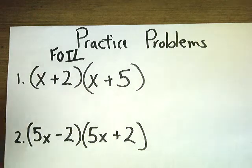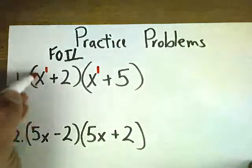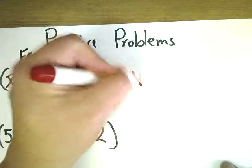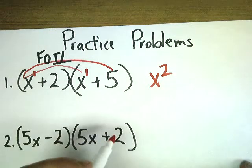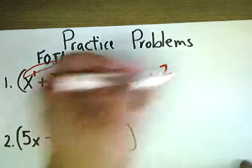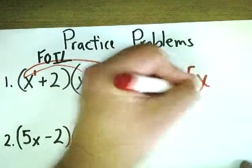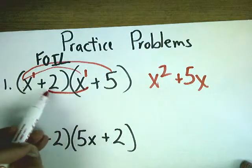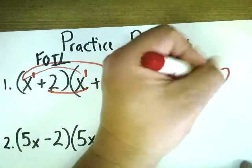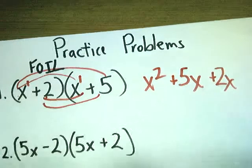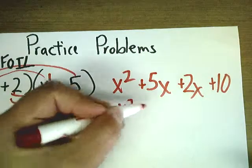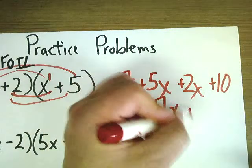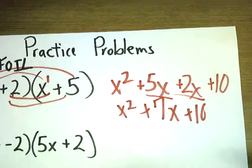The front numbers here, I've got x to the first power times x to the first power, so that reads to me x squared. Then I've got outside, so it's x times 5, so 5x. Then I've got my inside, which is 2 times x, which is 2x. Then I've got my last, which is 5 times 2 being 10. So x squared plus 7x plus 10. I did a little matchmaking. That's how I got that 7.